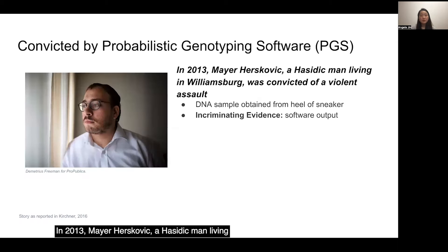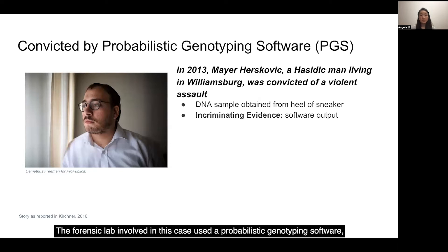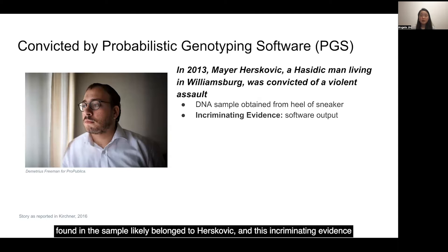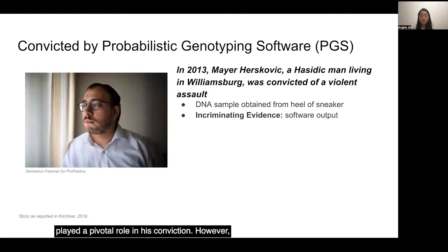In 2013, Mayor Herskovich, a Hasidic man living in Williamsburg, was convicted of a violent assault. The forensic lab involved in this case used a probabilistic genotyping software, or PGS, to analyze a DNA sample obtained from the victim's sneaker. The software's output concluded that DNA found in this sample likely belonged to Herskovich, and this incriminating evidence played a pivotal role in his conviction.